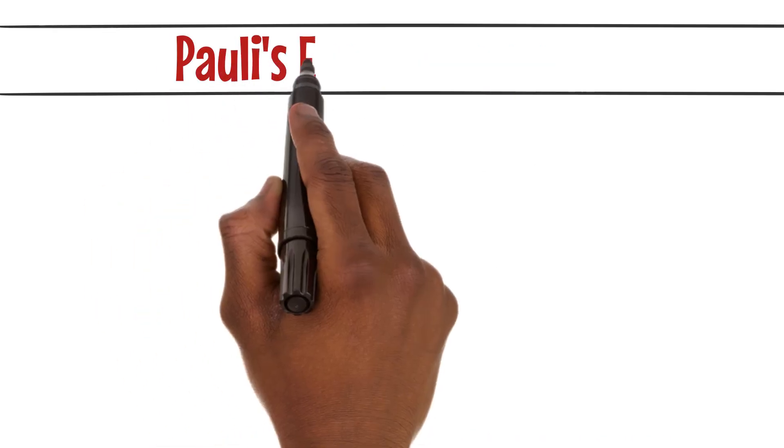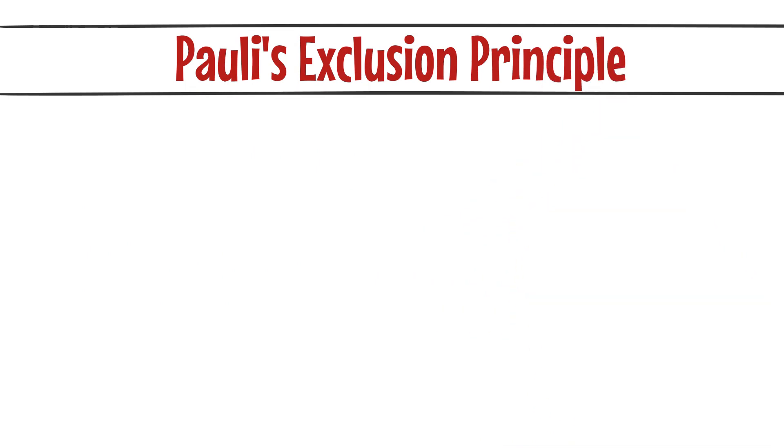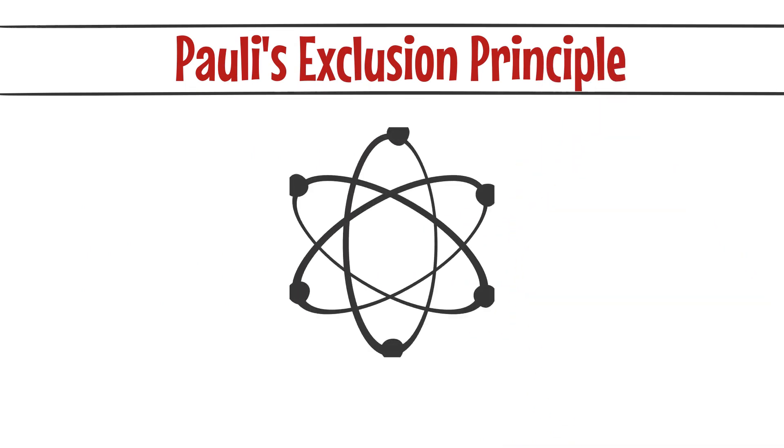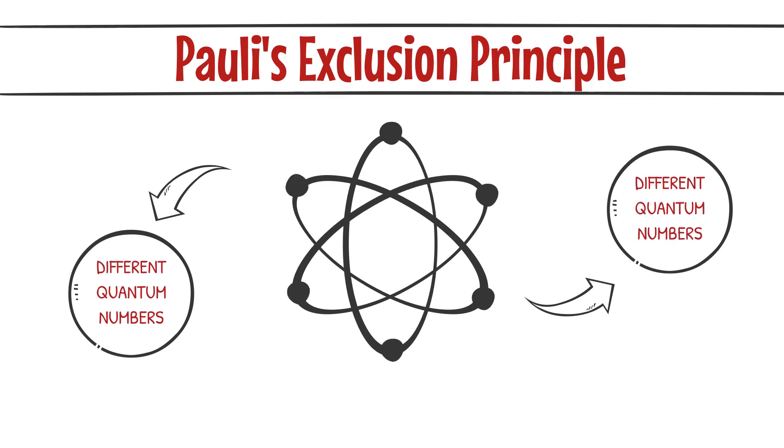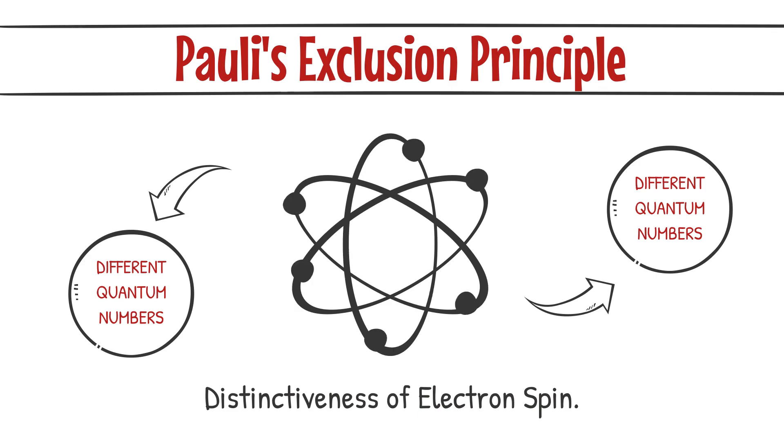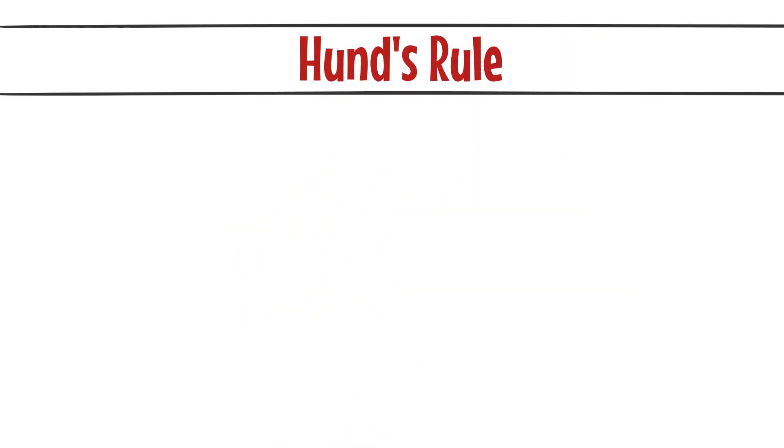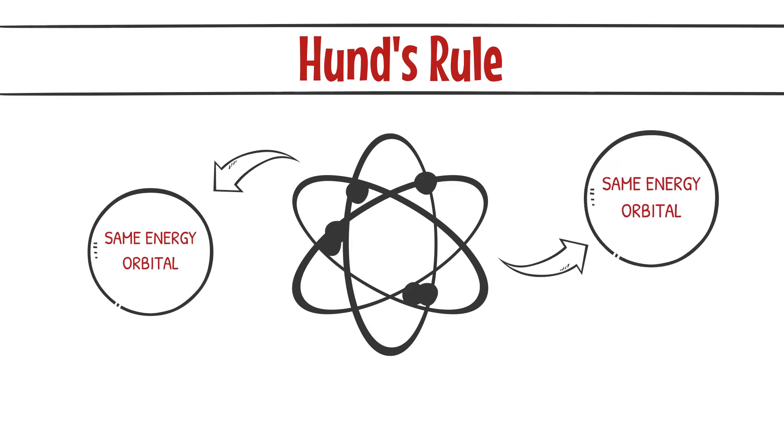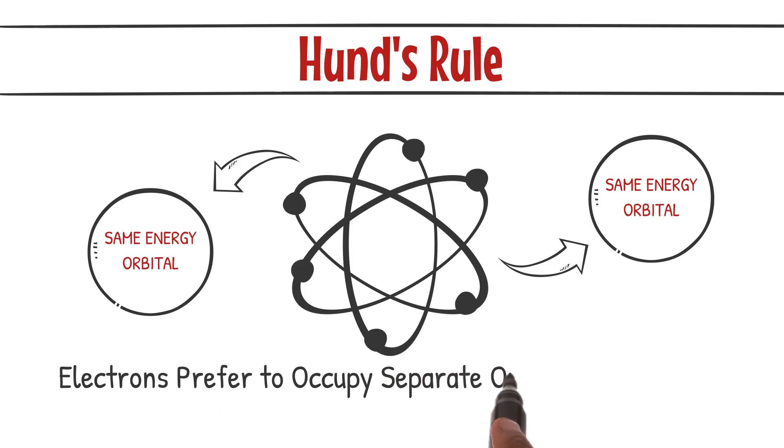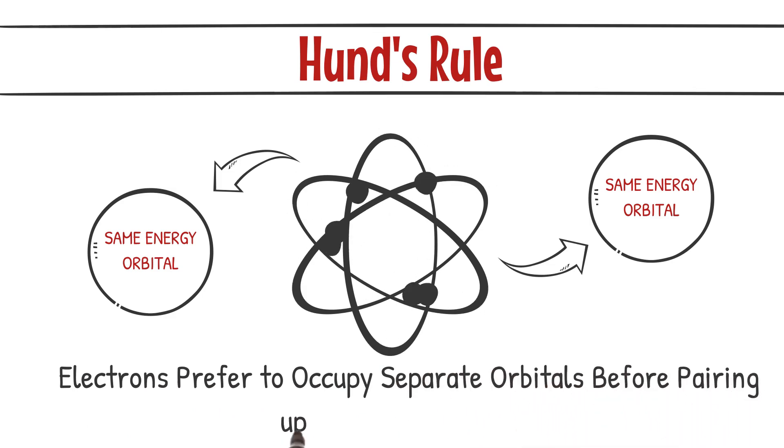The second rule is Pauli's exclusion principle, which states that no two electrons in an atom can have the same set of four quantum numbers. This principle accounts for the distinctiveness of electron spin. Finally, we have Hund's rule, which governs the distribution of electrons in orbitals of the same energy. According to Hund's rule, electrons prefer to occupy separate orbitals before pairing up with opposite spins.